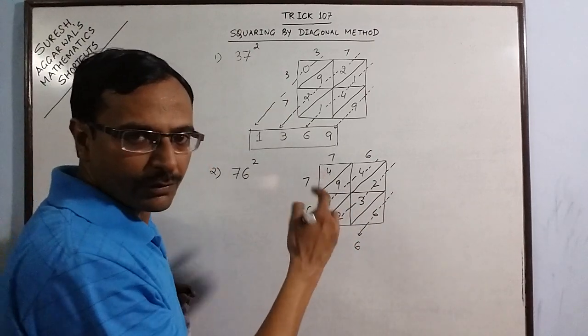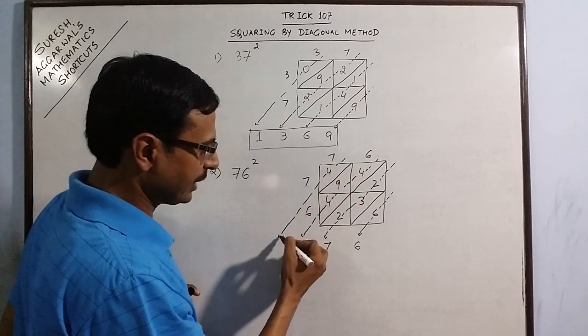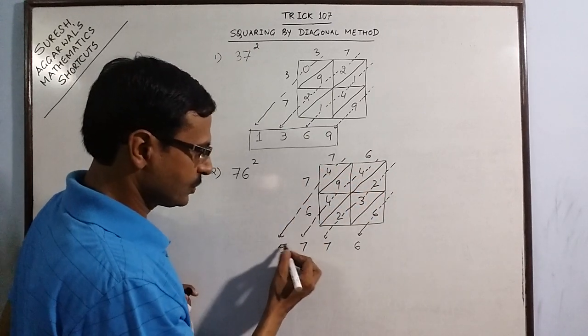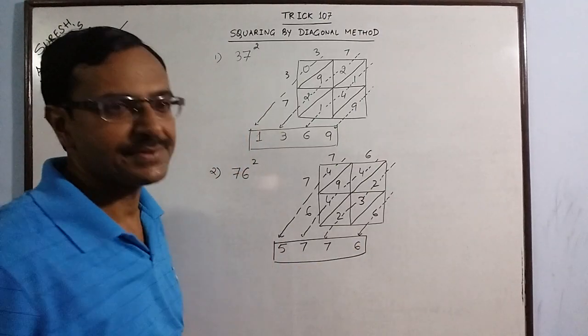So 7. You have to carry forward 1. And the final number is 4. You have carried forward 1. So 5. So 5, 7, 7, 6 is the square of 76.